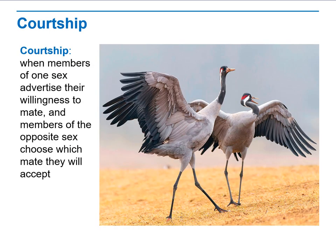Courtship is when one member of one sex advertises their willingness and ability to mate, and a member of the opposite sex chooses whether to accept or not. It is a way for a male to attract a female by displaying specific characteristics, giving the female the opportunity to respond and decide whether she wants to mate with him.